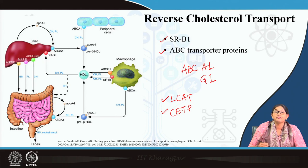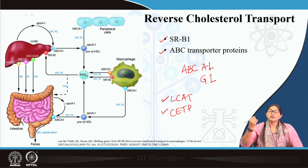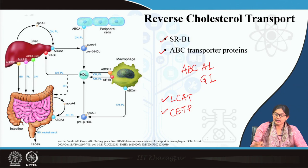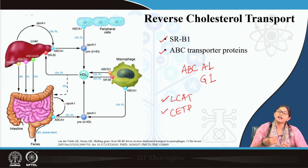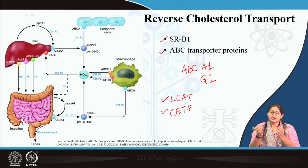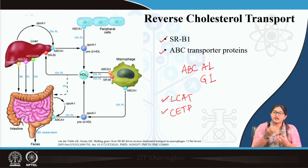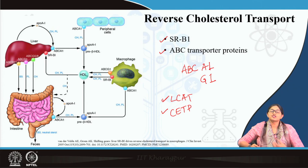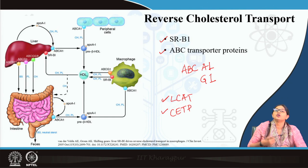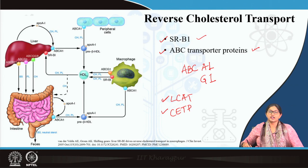Another protein is CETP — cholesterol ester transfer protein — which delivers cholesterol ester from HDL to other lipoproteins like VLDL and LDL. Both LCAT and CETP reduce the cholesterol content in HDL. Cholesterol-depleted HDL circulating through extra-hepatic tissues creates a concentration gradient, which is the main driving force for cholesterol transfer from extra-hepatic tissue to HDL through receptors SRB1 and ABC transporter proteins.